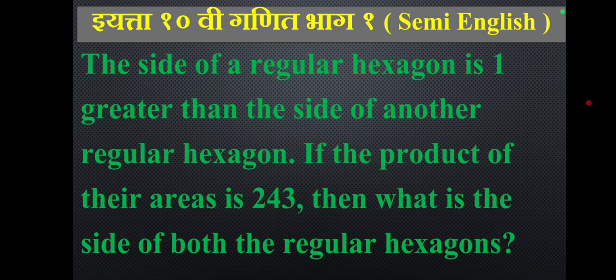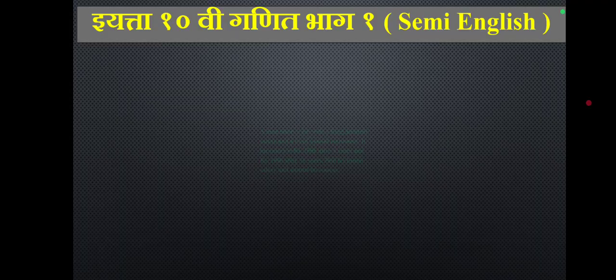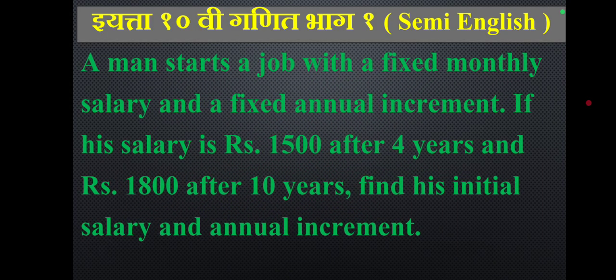The side of a regular hexagon is one greater than the side of another regular hexagon. If the product of their areas is 243, what is the side length of both regular hexagons?